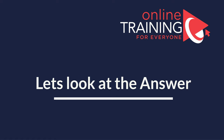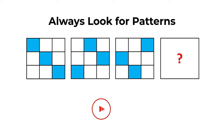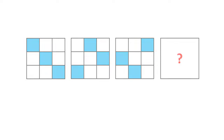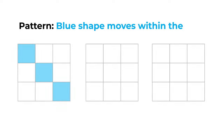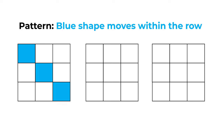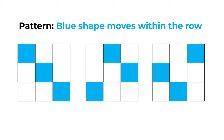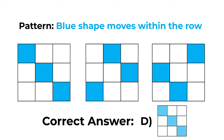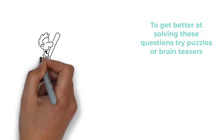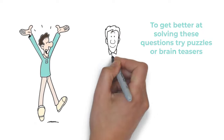Always look for patterns — determining the pattern is key to solving this problem. The blue shape moves within the row of the larger shape. In each row, the blue shape moves from left to right one step at a time, and once it reaches the end of the row on the right, it reappears on the left. So the correct answer here is choice D. Hopefully you've nailed this question and now know how to answer similar problems on the test.